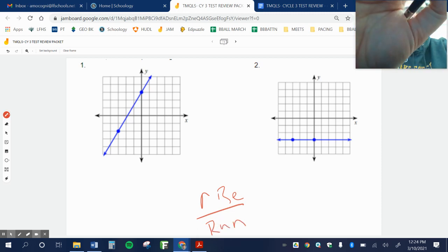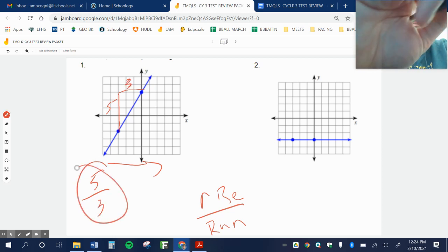So my rise, if I'm moving from left to right here, I go up one, two, three, four, five. Is that right? One, two, three, four, five. Yep. All right, so up five over one, two. My slope is five over three.